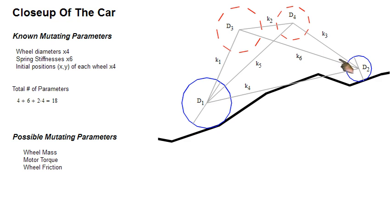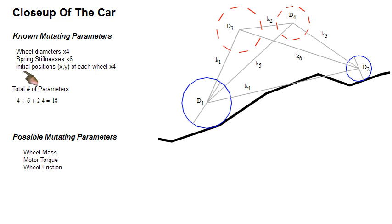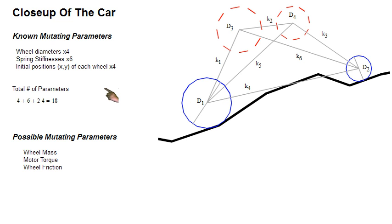We know that there are four wheels, and they all change diameter. Each wheel has a connection between them — these spring-like connectors. The known mutating parameters are the four wheels, the six springs, and the initial x and y coordinates of each wheel. As the population evolves, the wheels move, so I know for a fact that each creature has at least 18 parameters that change over time.